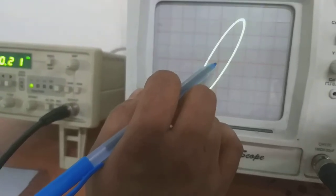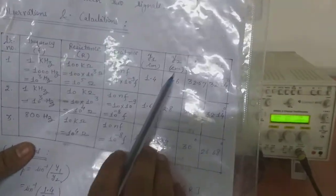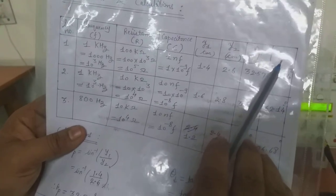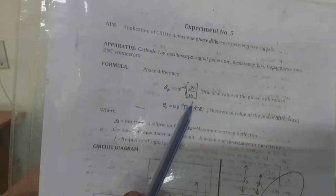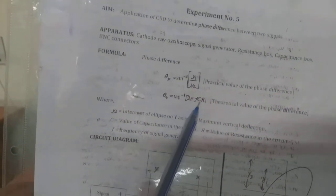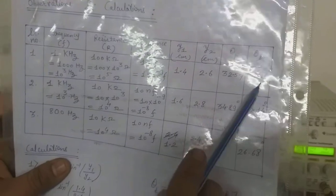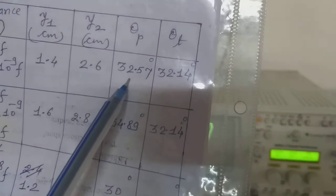From the observation table, Y1 is observed as 1.4 cm and Y2 is 2.6 cm. You calculate the practical phase angle theta_p using the formula: theta_p = sin⁻¹(Y1/Y2). The theoretical value theta_t = tan⁻¹(2πfCR), where f is frequency, C is capacitance, and R is resistance. These two values must be approximately equal — for example, 32.57 and 32.14 — for your first reading.